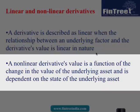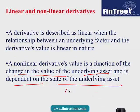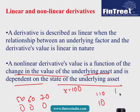A nonlinear derivative's value is a function of the change in the value of the underlying asset and is also dependent on the state of the underlying asset. For example, with a call option with a strike price of 100: if the price of the underlying is 70, 60, or 50, the value is 0. But if it's 110, the value is 10; if it's 120, the value is 20. We have to factor in the current state of the underlying asset — that makes it a nonlinear derivative.